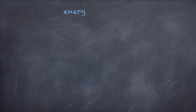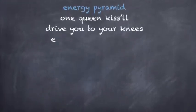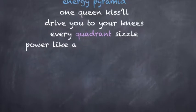Dominant inheritance, halo thistle. Energy pyramid, one queen kiss.